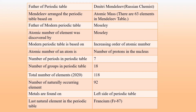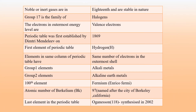Uranium is the last natural element found in large quantities. The group 18 elements are known as noble or inert gases. They are stable in nature, their outermost shells are full, and they are unable to form compounds.